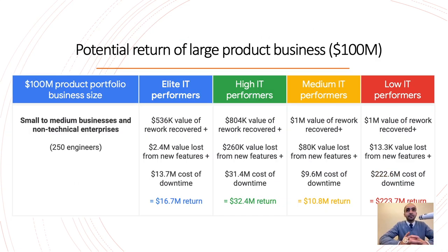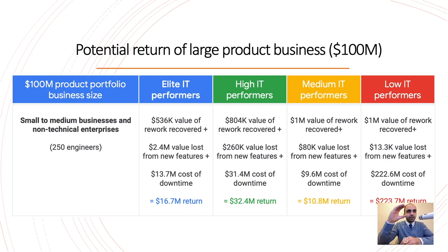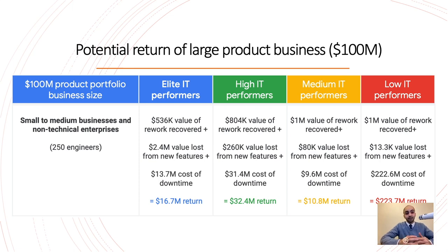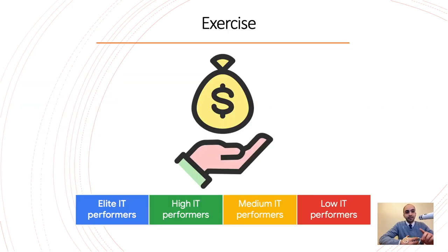Let's sum everything up using a high IT performer profile with a small group of just 250 engineers. We have $800K of value recovered from rework avoided, $260K from new idea generation, and around $31 million in cost of downtime avoided — which is a very large number. That is the total value you can bring to your organization. Now take out your paper and calculate what the value would be for your own company.